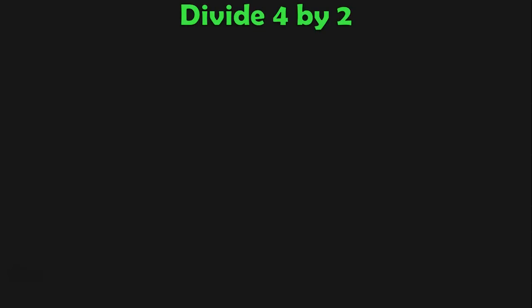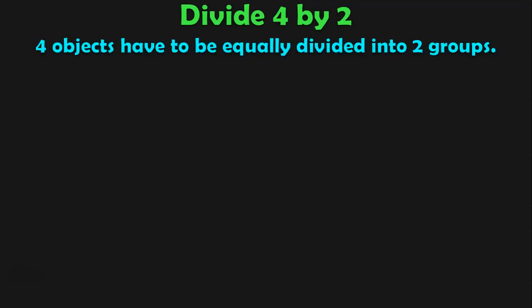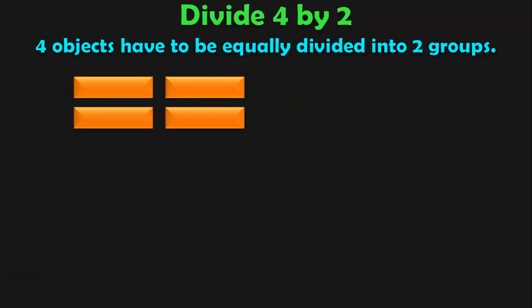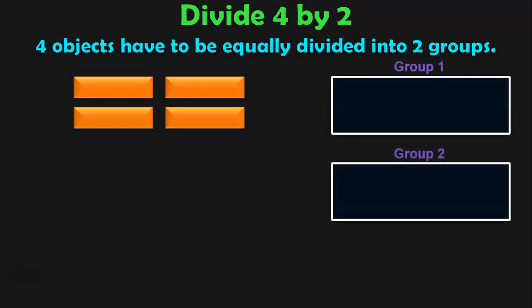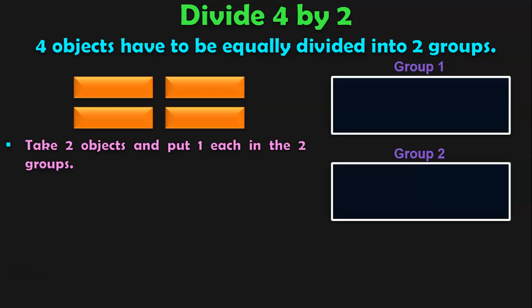The first sum that we are going to see is divide 4 by 2, which means that 4 objects have to be equally divided into 2 groups. Here we have 4 rectangular objects and we have 2 groups. Now we have to split these 4 objects equally into 2 groups. Let us do it step by step. First, take 2 objects because we are going to divide 4 by 2. So take 2 objects and put 1 each in the 2 groups.